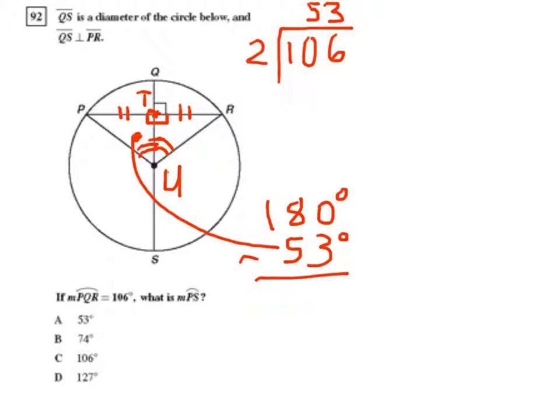And we know that the measure of the angle whose vertex lies at the center of the circle is equal to the measure of the arc that it intercepts. So it intercepts this arc PS, which is what they're asking us for. So then arc PS must also be 127 degrees, and that leads us to answer D.